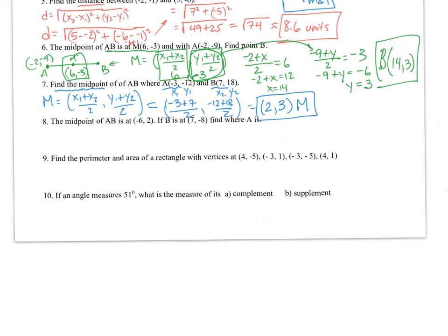For number 8, it's the same concept as number 6. This is point B, and I need to find where A is, and I'm told that this is the midpoint. So we need to say 7 plus your second x value over 2 is negative 6, and then negative 8 plus your second y value over 2 equals 2. On this first one, cross multiply, so 7 plus x equals negative 12. Subtract the 7 over, so x equals negative 19. On the second one, cross multiply, negative 8 plus y equals 4. Add 8 to each side, y equals 12. So negative 19 comma 12 is where point A is.